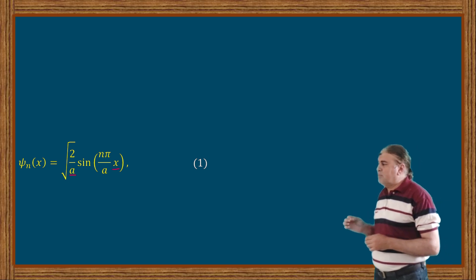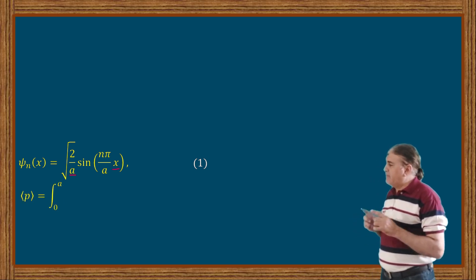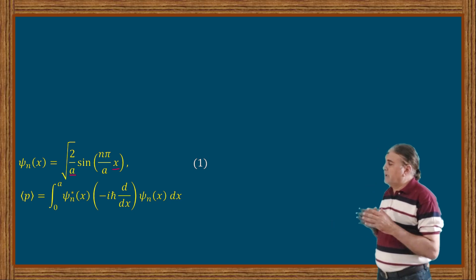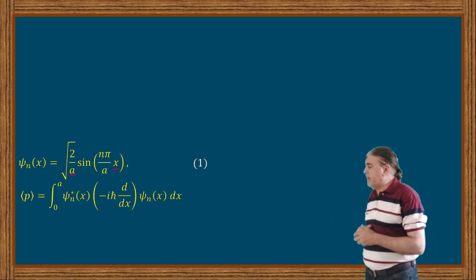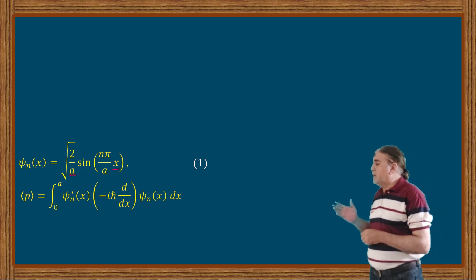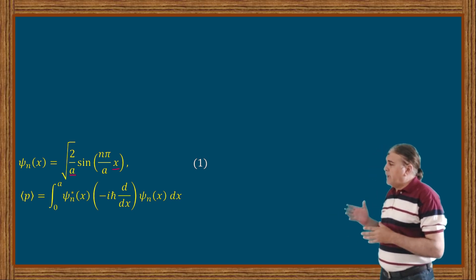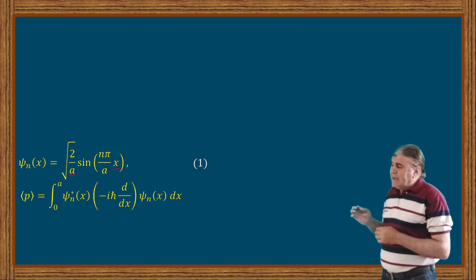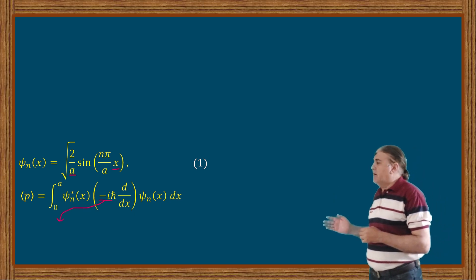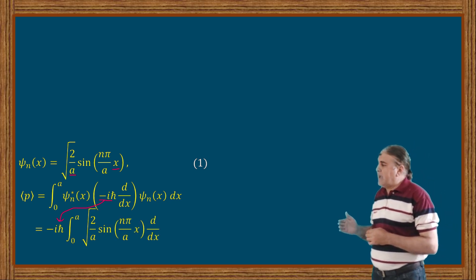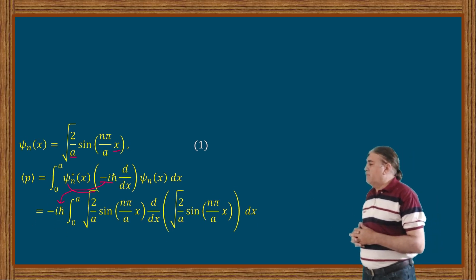The expectation value of momentum is obtained by sandwiching the operator form of the momentum between the conjugate of the wave function and the wave function, then integrating over the width of the well. Since the wave functions for all values of quantum number N are real, taking the conjugate is essentially meaningless, however we follow the standard procedure. Taking minus iota h-bar to the left of the integral and substituting the values for psi-star N and psi N, I can rewrite the relation into this form.